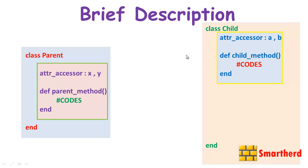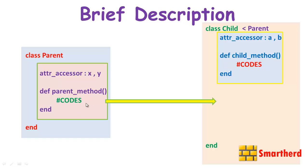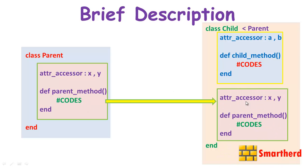The syntax of inheritance in Ruby is: class Child, then a less-than sign, then class Parent — like this: class Child < Parent. When we write this, the entire body of the parent class — x, y, and parent_method — becomes part of the class Child.